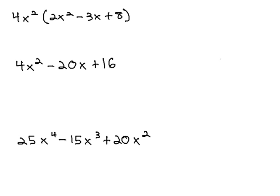To set this up, the idea of factoring out the greatest common factor is the exact opposite idea that we've seen when multiplying something like 4x² times (2x² - 3x + 8).